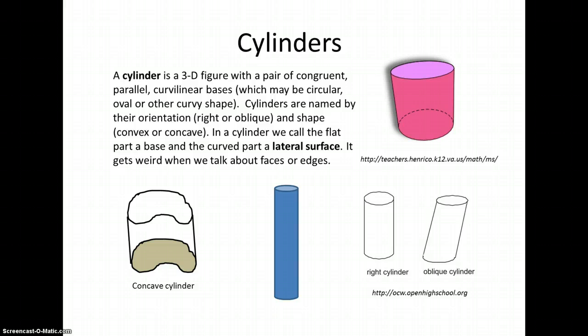A cylinder is a three-dimensional figure that has a pair of bases. In the picture of the pink cylinder, we see a base at the top and the bottom. These bases are congruent, the same size and shape.